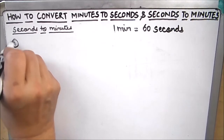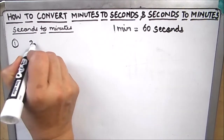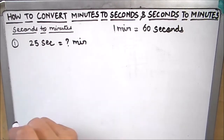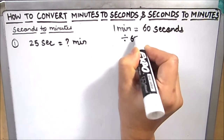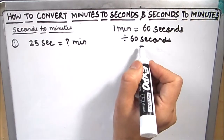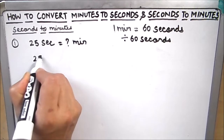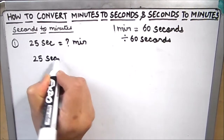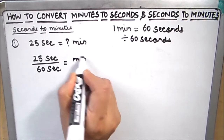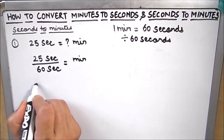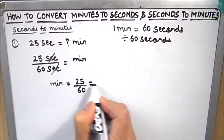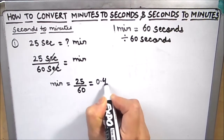Let's take one example. The first one is to convert 25 seconds into how many minutes. To convert from seconds to minutes we need to divide by 60, because 1 minute is 60 seconds. So we need to divide the seconds quantity by 60 to get the minutes. So 25 seconds divided by 60 seconds equals 0.41 minutes.